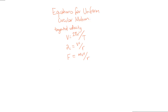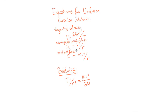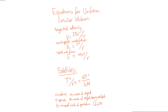We also have the special case for satellites, which uses Newton's universal law of gravitation. If we substitute in these values, we find that the period of an orbit squared, big T squared, divided by the radius of that orbit cubed, r cubed, is equal to 4π² divided by big G times big M — the universal constant of gravitation multiplied by the mass of the object being orbited.